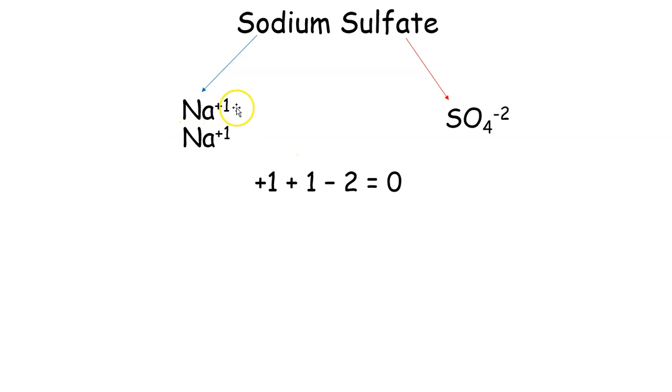And I change the equation. So I have +1, +1, -2, and I get zero. So I have the correct quantities of sodiums and sulfates.